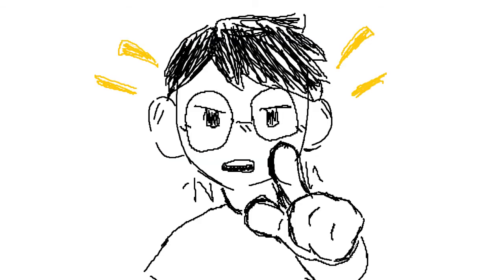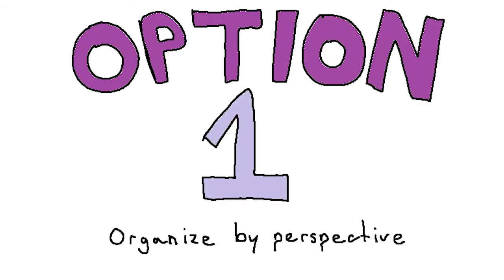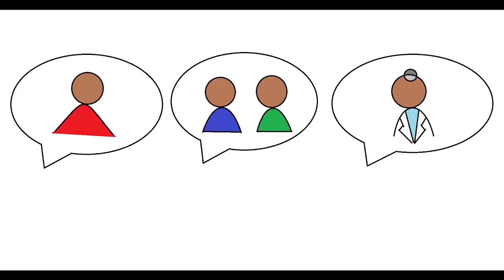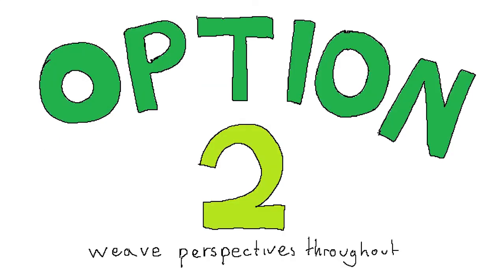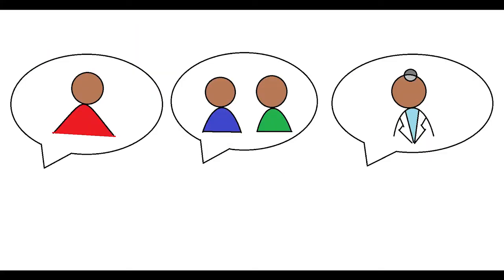There are three recommended ways to organize your body paragraphs. Option one is to organize by perspective. This approach is suitable if you've identified at least three different stakeholders, such as parents, teachers, students, etc., within your lens whose perspectives you want to compare and contrast. Option two is to weave perspectives throughout. This approach is suitable if you've identified at least three different stakeholders' perspectives, as in option one, but would prefer not to section off your paper by perspective.